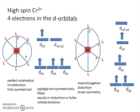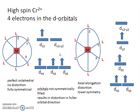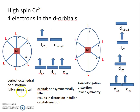In the undistorted state, you have three orbitals at the same energy and two orbitals at a different energy. In the high spin state, you must choose where to place the fourth electron — in the dz² or the dx²-y² orbital. In this instance, we have decided to put the electron in the dz² orbital.